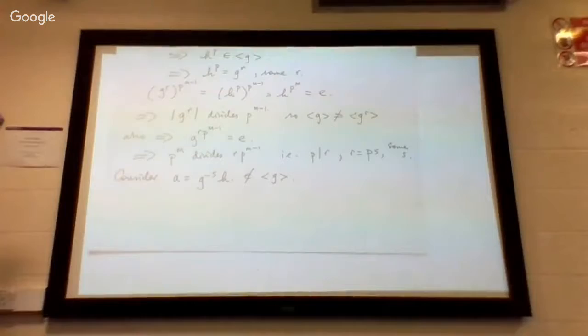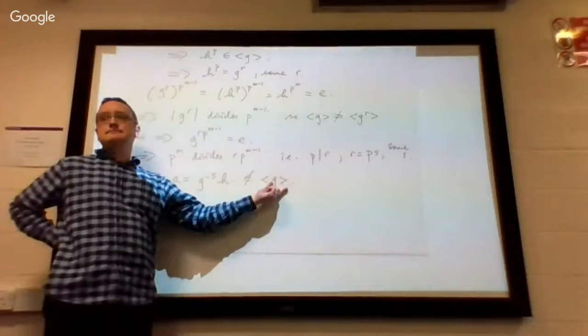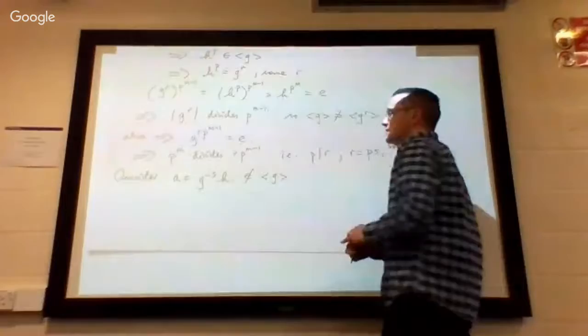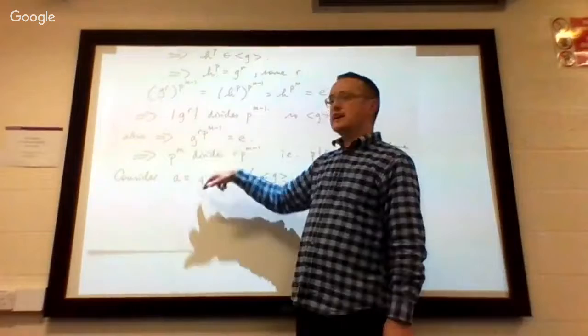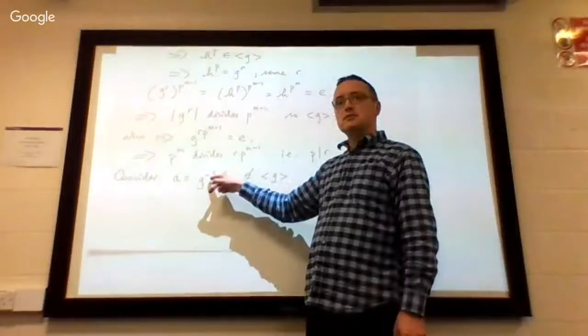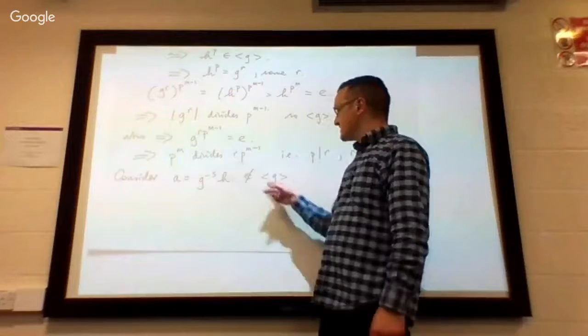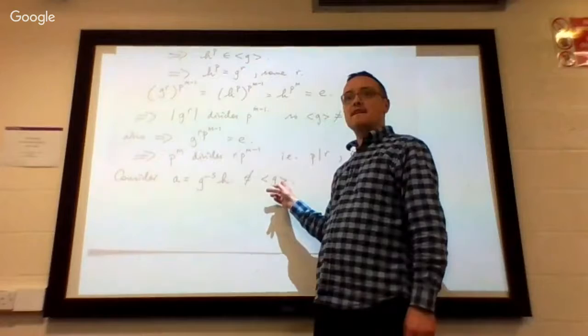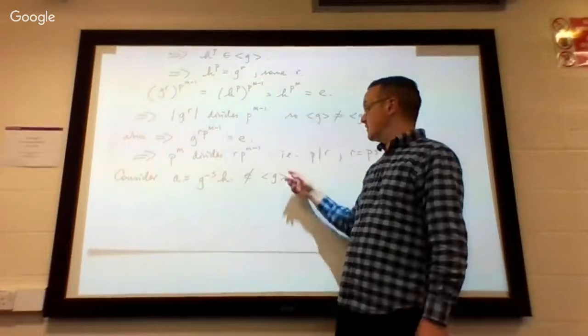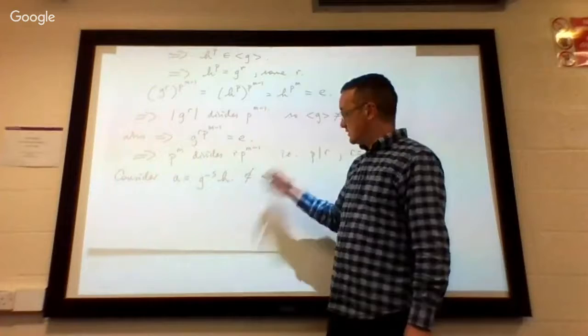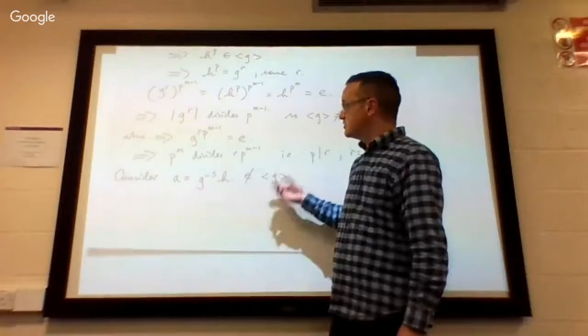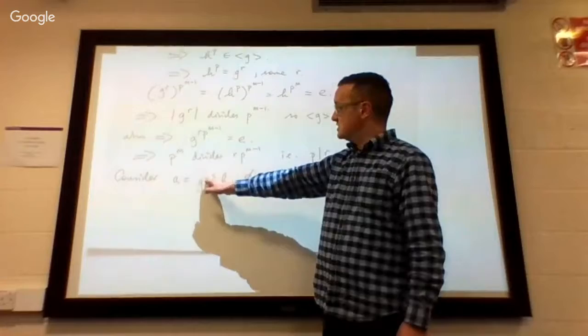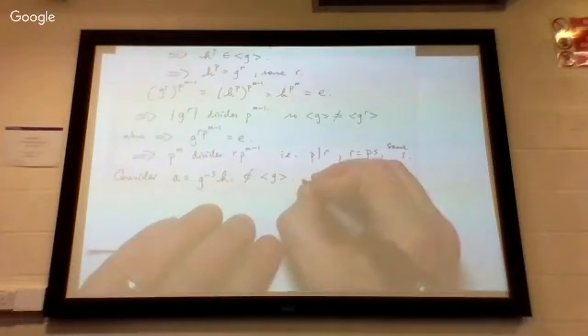Now we consider the element a = g^(-s)·h. This a is not in the cyclic subgroup generated by g. Why? A quick mini-proof by contradiction: suppose it was in there. Then by closure, you could multiply it by powers of g, cancel off the g^(-s) factor, and you'd end up saying that h was in ⟨g⟩. But h was chosen at the beginning to not be in ⟨g⟩. So a is not in the cyclic subgroup generated by g.